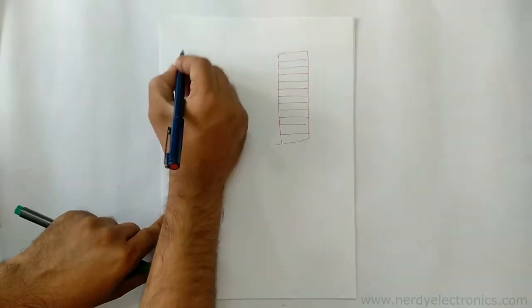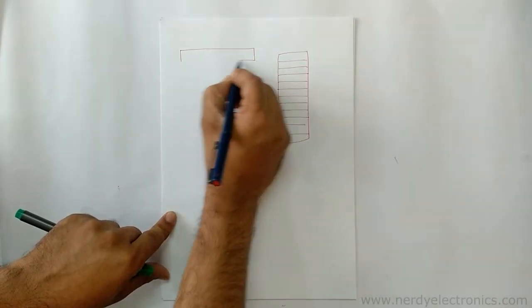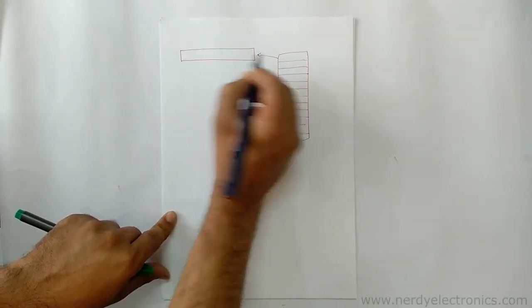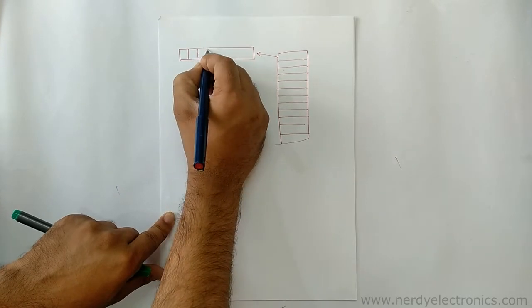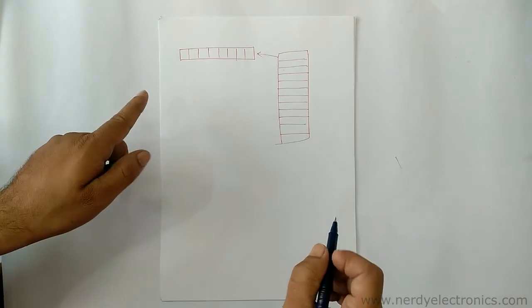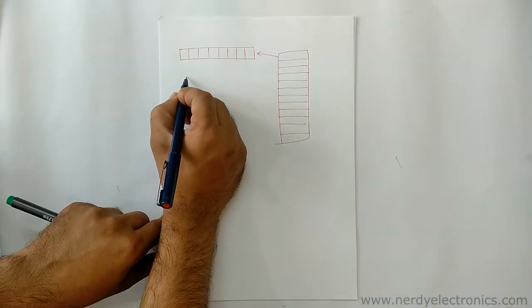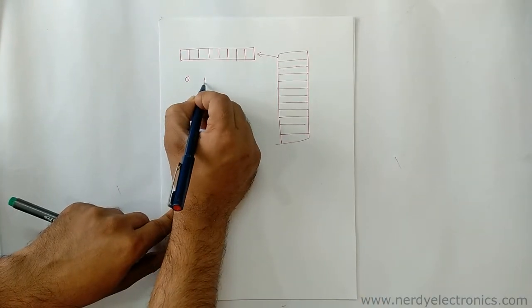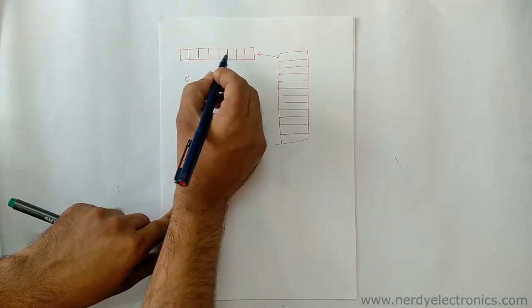So what we mean by 8 bits: this is, let's say, one location, this one, and there are 8 cells inside this. Each of these cells can store one digit, that is either 0 or 1. Total there are 8.